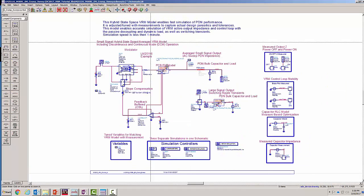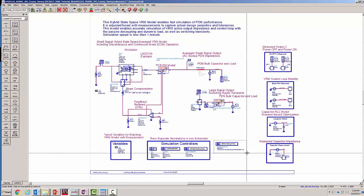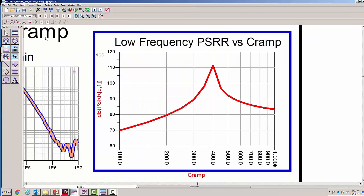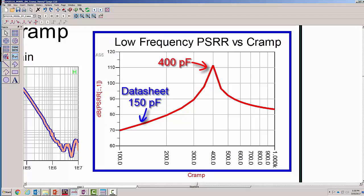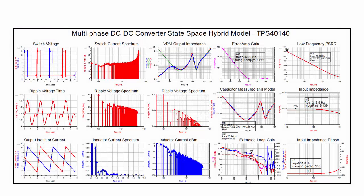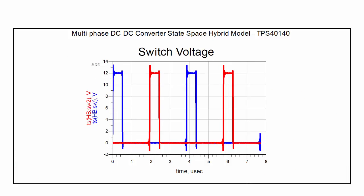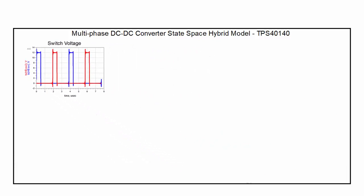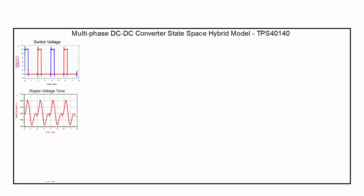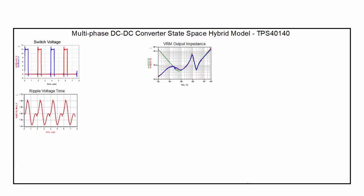Setting up a sweep of the CRAMP variable with the batch simulator in ADS makes it easy to plot PSRR versus CRAMP to locate the best value for the ramp capacitor. In this example, we can significantly improve the PSRR by increasing the value of the RAMP capacitor — this is a benefit of simulation. This state-space hybrid model also works with multi-phase DC-to-DC converters. The switch voltage clearly shows two phases 180 degrees apart, and the resulting large signal ripple voltage and small signal AC output impedance.